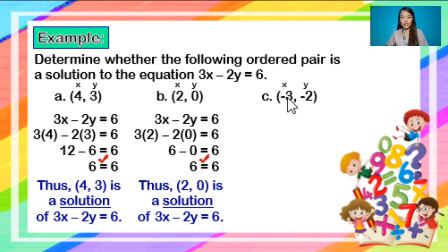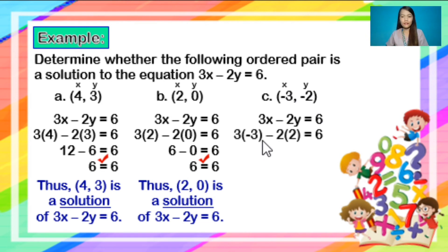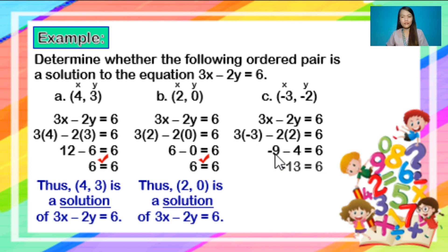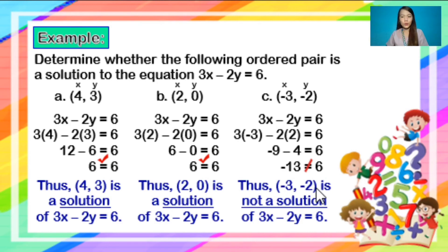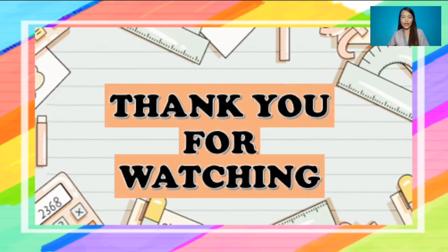The third ordered pair is (-3, -2), where x is negative 3 and y is negative 2. Substituting into 3x minus 2y equals 6: 3 times negative 3 minus 2 times 2 equals 6. That gives negative 9 minus 4 equals negative 13, which is not equal to 6. Therefore, (-3, -2) is not a solution of 3x minus 2y equals 6. That's all for now. Thank you for watching!